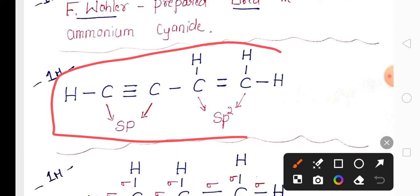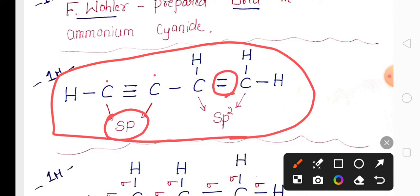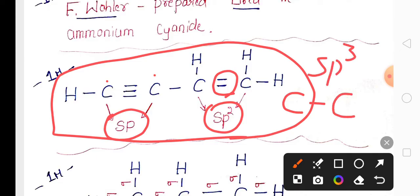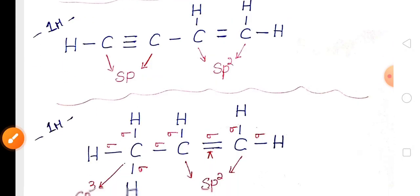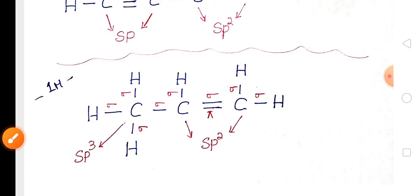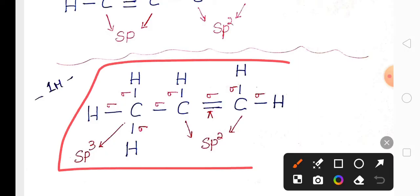They may also ask you to find the hybridization of a carbon atom. If you find a triple bond, the hybridization is sp. If you find a double bond, the hybridization is sp2. If you find a carbon-carbon single bond, the hybridization is sp3. They also ask you to calculate the number of sigma and pi bonds.